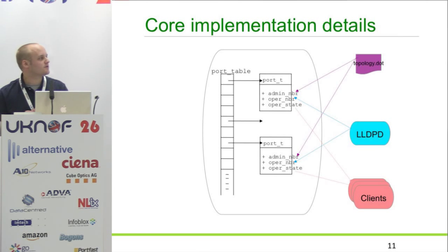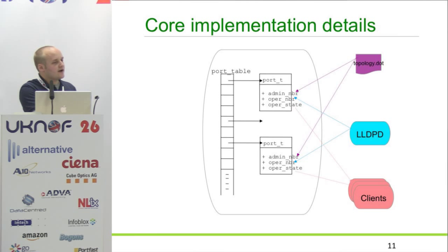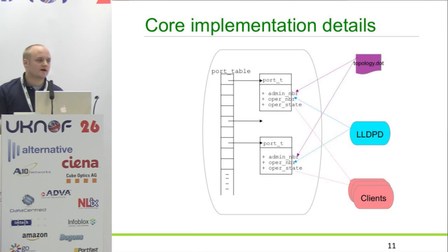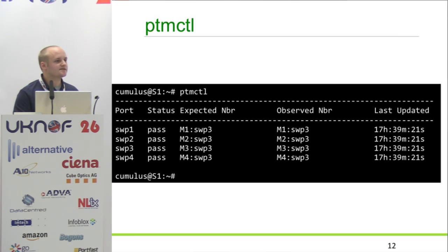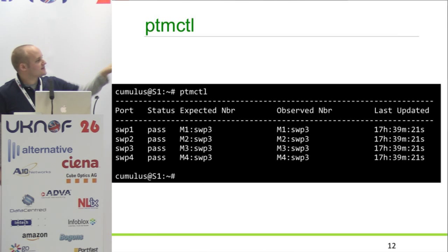This is how it's implemented. We have a simple table. We take the topology from the dot file, so we know the interface name. Then we look at LLDP to work out the neighbor on the particular port, and then determine the state — pass or fail. Various PTM clients can hook in and look at that status; an example would be Quagga. In the command line interface, we're expecting switch port 1 to be connected to mid-spine switch 1 on switch port 3, and you can see it passed — the observed neighbor is exactly as expected.